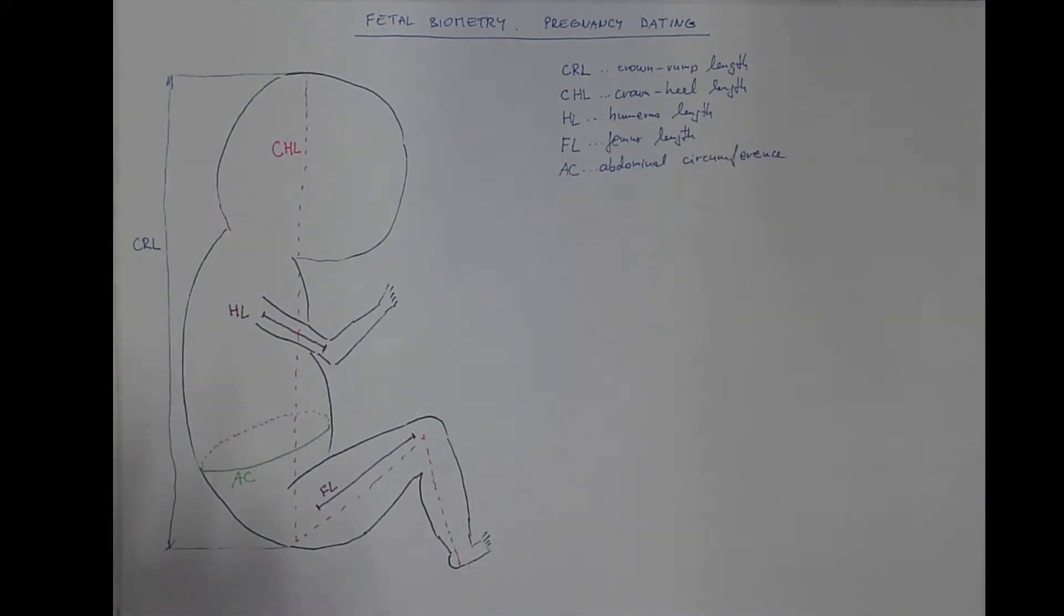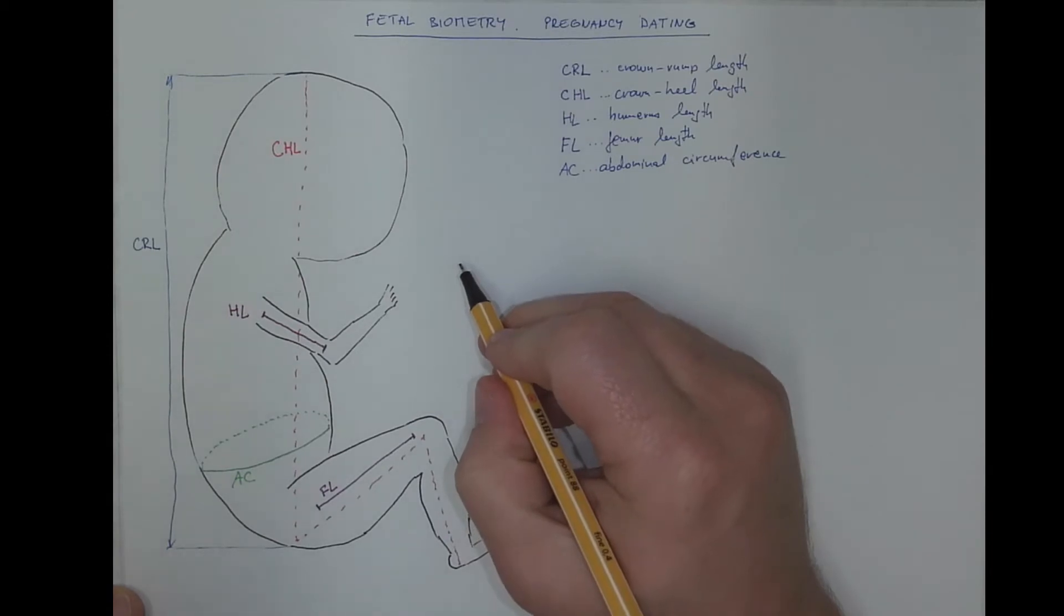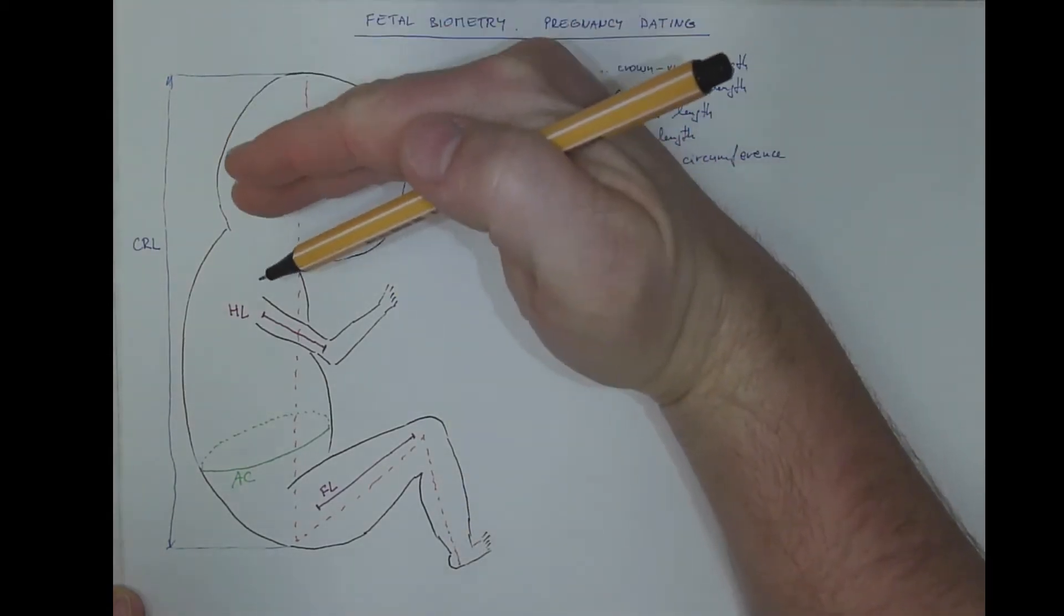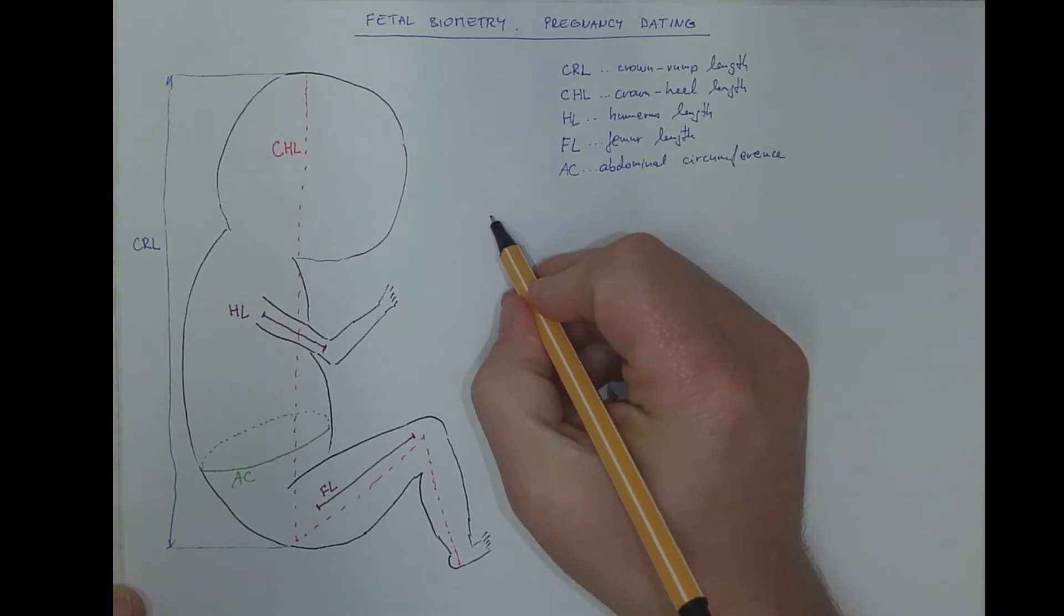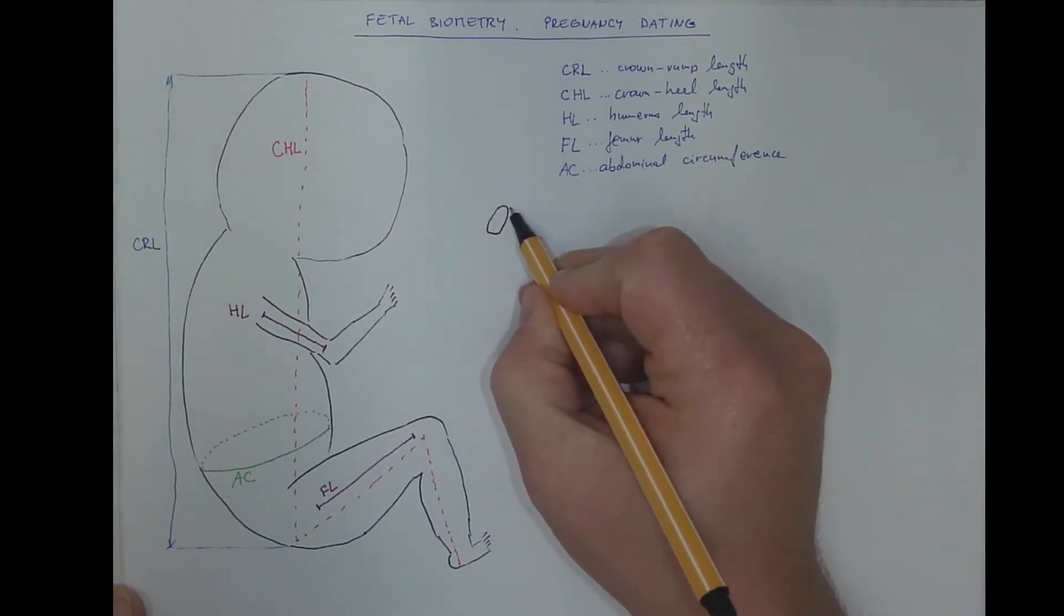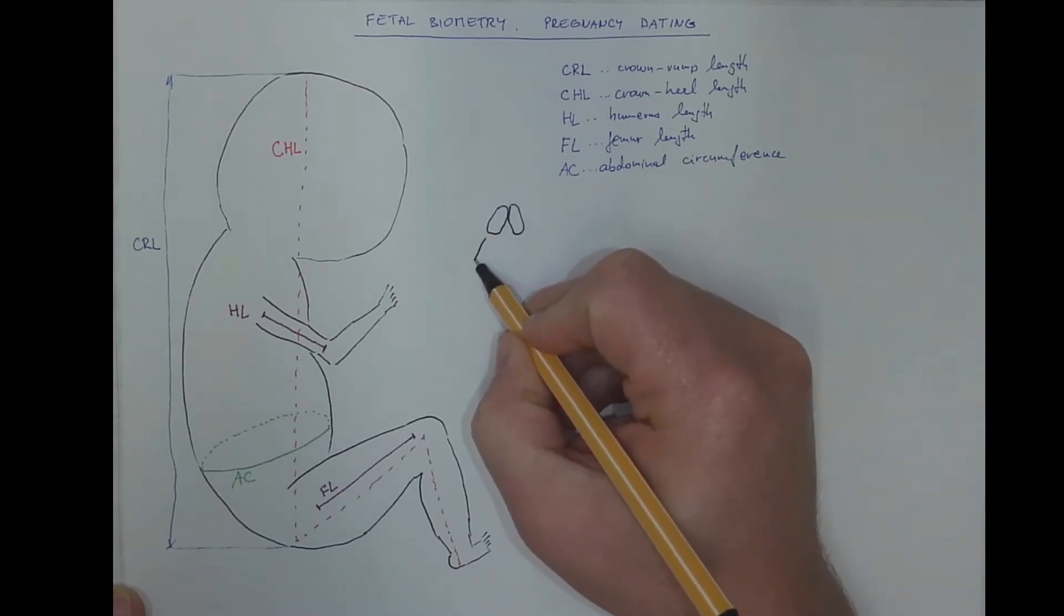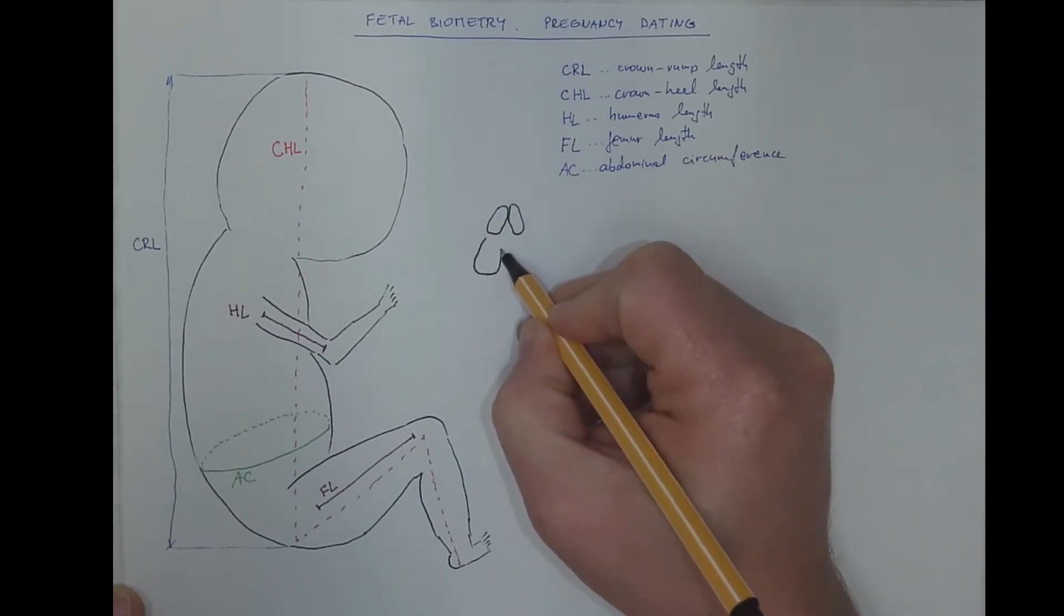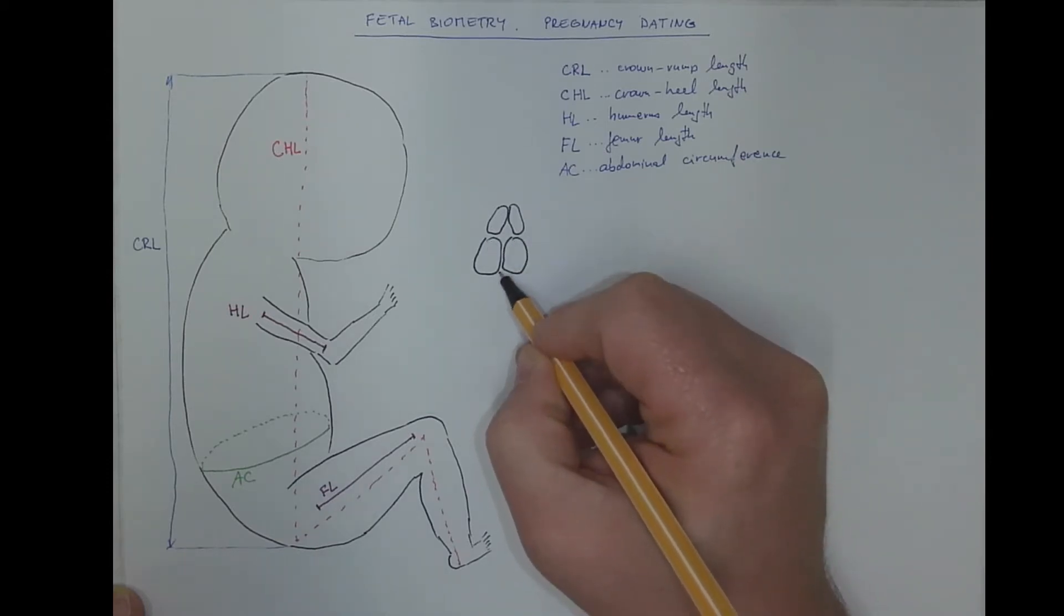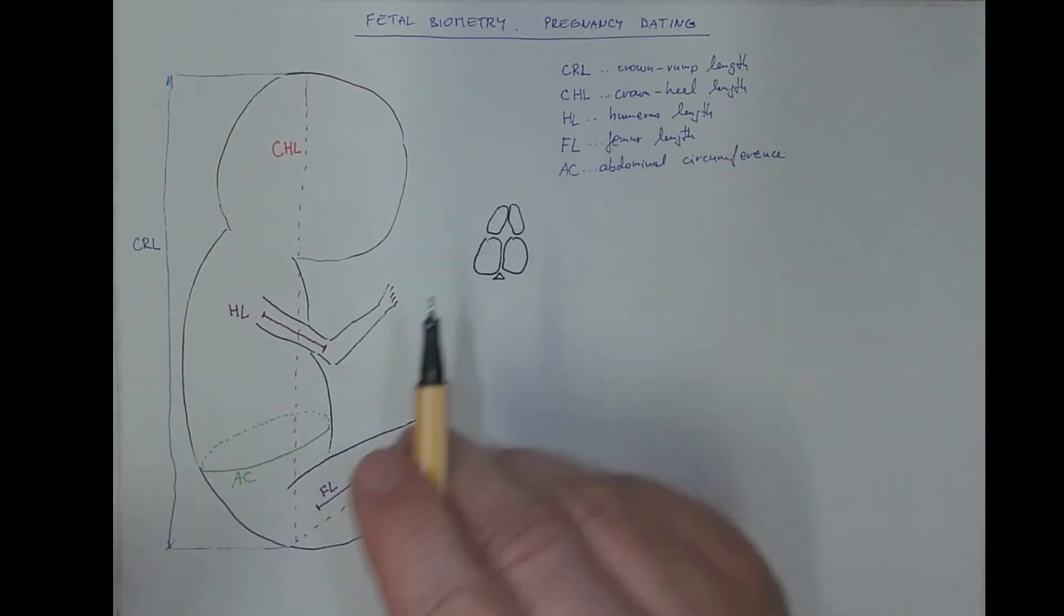The head is also quite a relevant structure for the fetal biometry. So if you would look from above with ultrasound, you would see the frontal bones and the parietal bones. Here it would be the lambdoid suture, the occipital, the squama of the occipital bone.